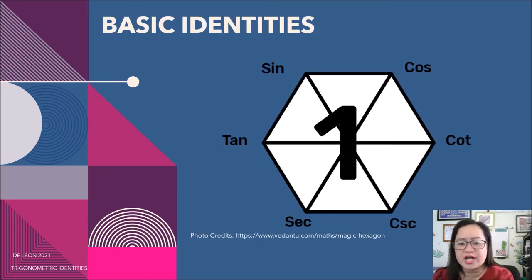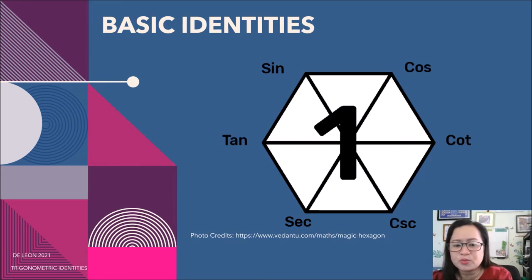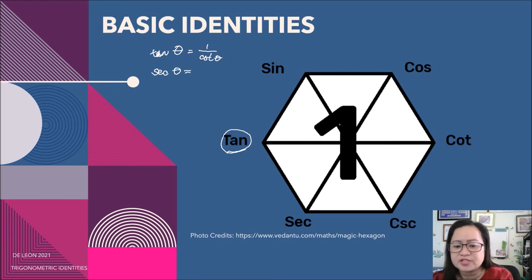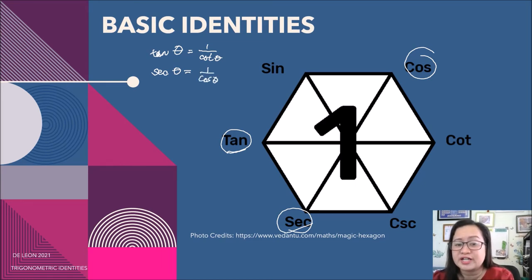We can use the superhexagon — or the tan-sine-cos hexagon — in forming the basic identities. In forming the reciprocal identities, we consider the functions located on opposite vertices of the hexagon. For example, for tangent theta, the opposite vertex is cotangent, so tangent theta equals 1 over cotangent theta. For secant theta, the opposite is cosecant, so secant theta equals 1 over cosine theta.